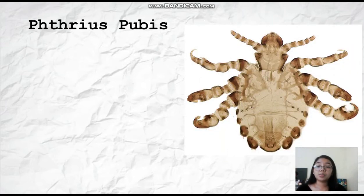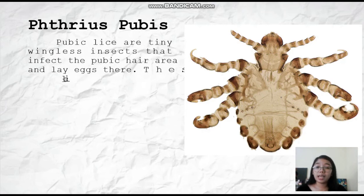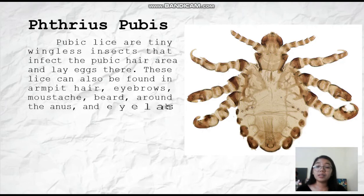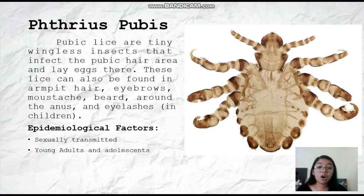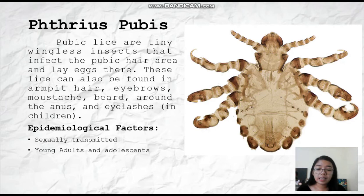Now let's talk about Phthirus pubis, also called pubic lice. Pubic lice are tiny wingless insects that infect the pubic area and lay eggs there. These lice can also be found in the armpit, eyebrows, mustache, beard, around the anus, and eyelashes in children. The epidemiological factor is that it is sexually transmitted and most commonly affects young adults and adults who are sexually active. Pubic lice look more like a crab — they are smaller and more delicate than the other types, but more irritating because they need to feed numerous times a day.